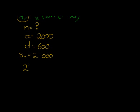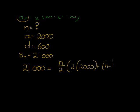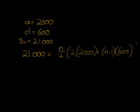We are going to have to substitute. 21,000 is equal to N over 2, 2 times 2,000 plus N minus 1 times D which is 600. And let's just go simplify that quickly.